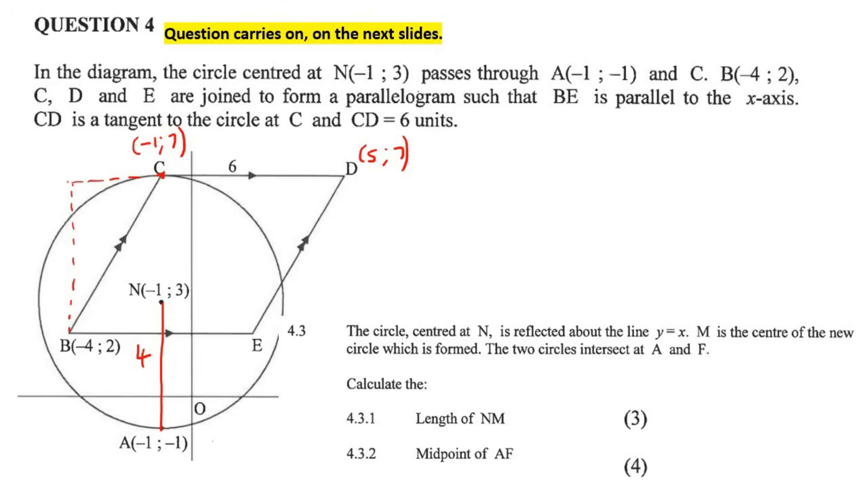Alright, so now moving on to the next part. I've tried to fill in as much of the information from the previous parts as I could. So now they say the circle, centered at n, is reflected over the line y equals to x. Oh my goodness. So the line y equals to x is a line that does this. It's the line where we take inverses. So like if you have this coordinate here, which is at 3 and 2, when you reflect it over that line, your x and your y change, because that's why it's called y equals x. So the y's become x's, and the x's become y's. So they're going to be reflecting it across that line.